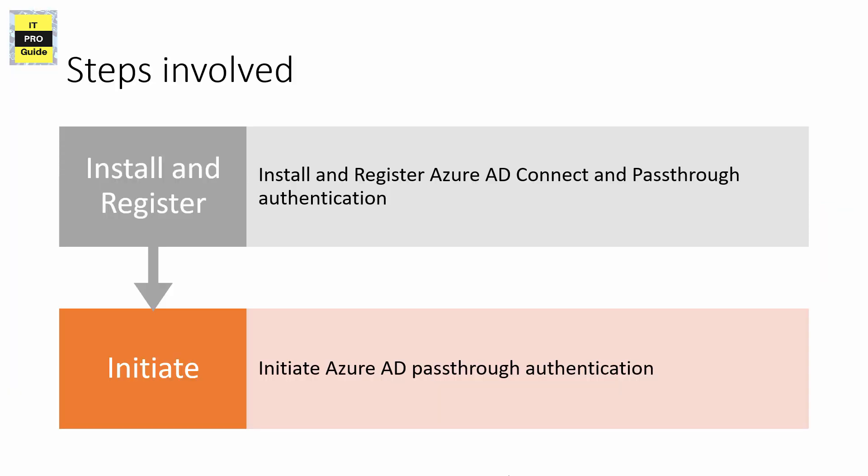Now you know what Azure AD pass-through authentication is. Next, we are going to see what happens when you install Azure AD Connect and configure it for pass-through authentication, and how the Azure AD pass-through authentication agent initiates its communication with Azure AD. We will cover the installation and registration process theoretically first, then the agent communication initialization, and finally a demonstration on how to set up Azure AD Connect for pass-through authentication.